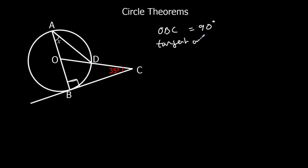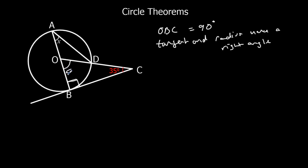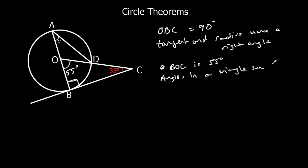Tangent and radius make a right angle. Then we can find the missing angle in the triangle. We've got 35 and 90, and we need them to make 180, so the missing angle is 55 degrees. Angle OBC — angle in the triangle — angles in a triangle sum to 180.